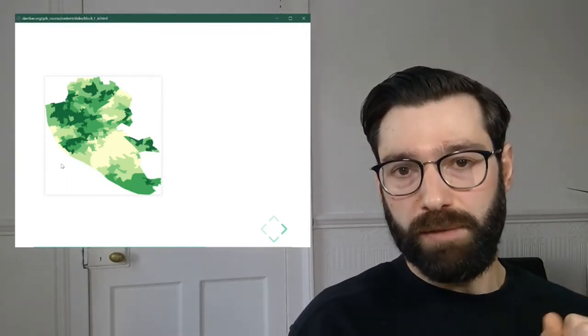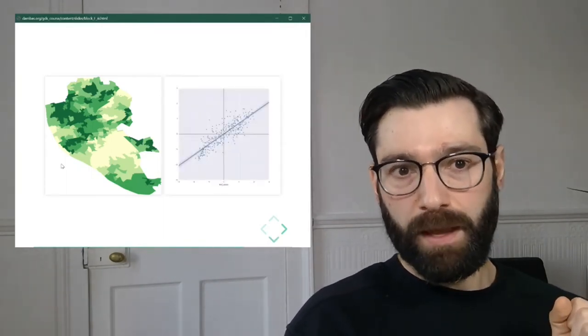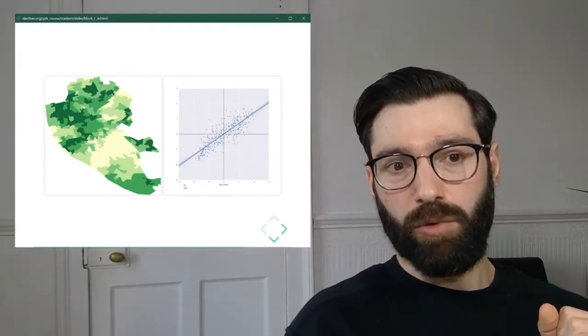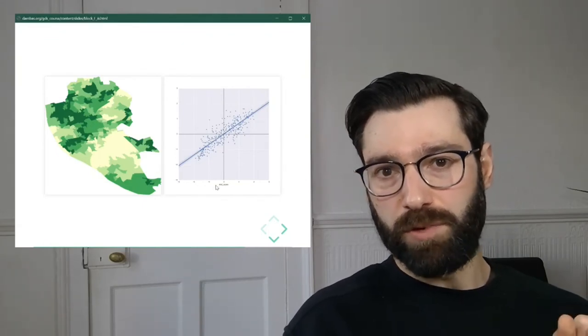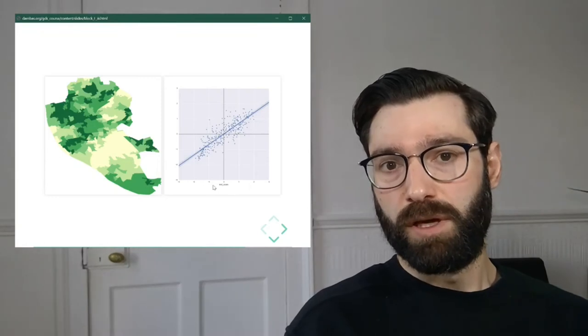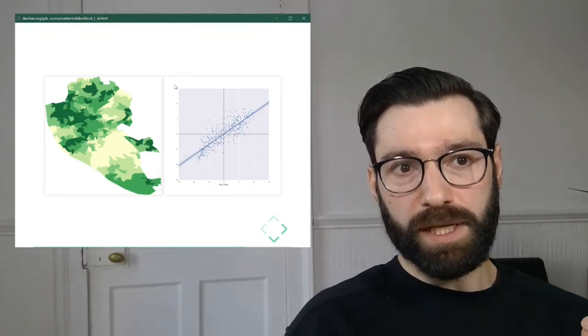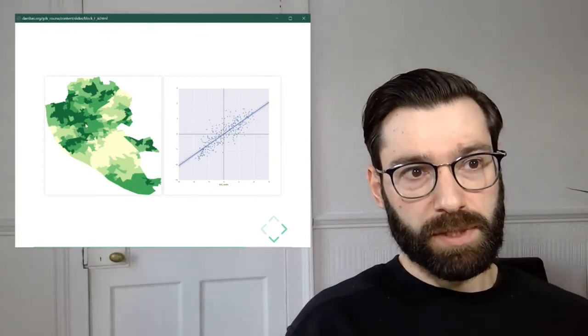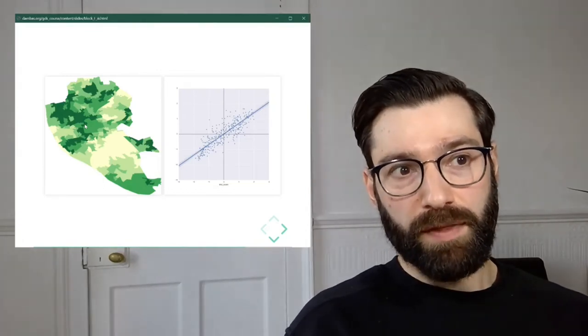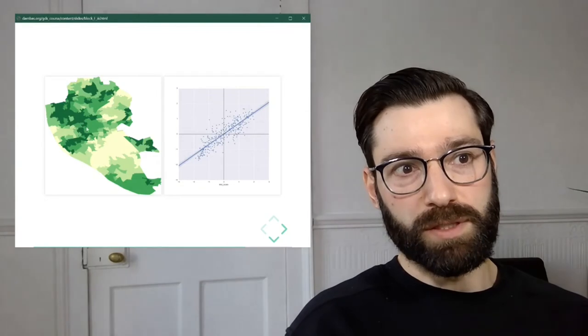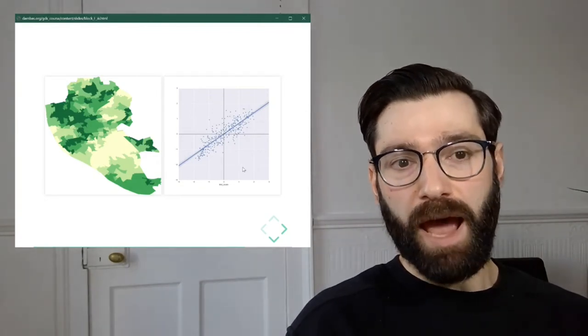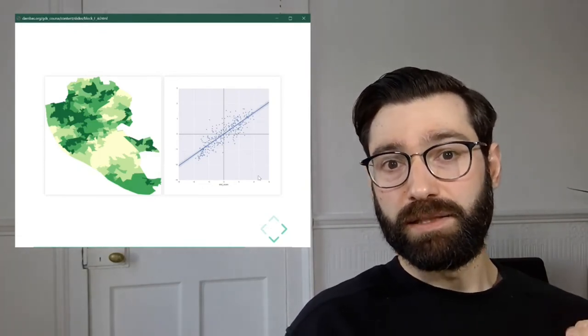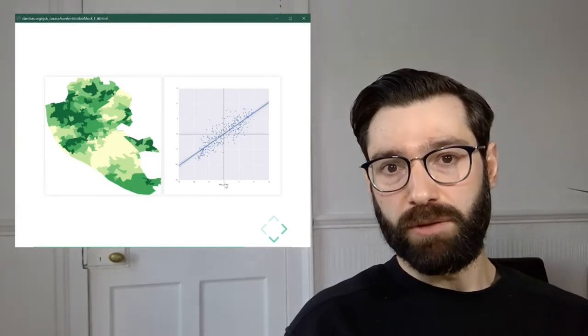Now let's look at what the Moran plot would look like for this map. Here on the horizontal axis, we have the IMD score, the index of multiple deprivation. And on the vertical axis, we have the spatial lag of that. So for a given polygon, the average deprivation that is associated not with the polygon, but with the surrounding neighbors. In this case, both the score and the spatial lag is standardized, which means that zero is associated with the average value.